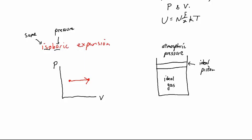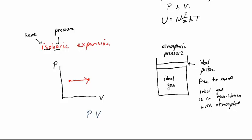So the ideal gas is in equilibrium with the atmosphere. What happens to the temperature as the gas expands? The volume is increasing, pressure stays the same, and from PV = NkT with P constant and V increasing, the temperature increases. So as the gas expands isobarically, it gets warmer. Conversely, in an isobaric compression, the gas gets cooler.